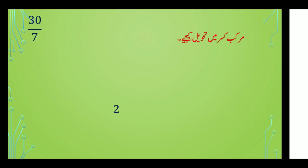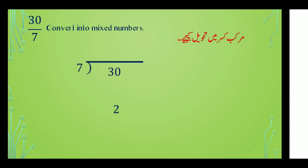اب ایک اور example لیتے ہیں جس میں مرقب قصر میں تحویل کرنا ہے — question number two: 30 upon 7 کو mixed number میں convert کرنا ہے۔ Convert 30 upon 7 into mixed number.